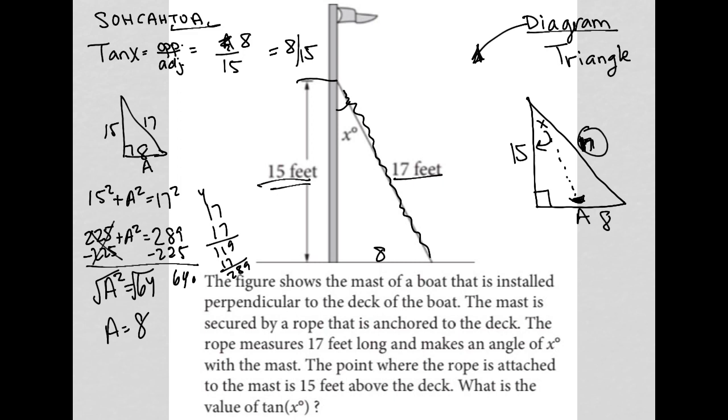So the answer to this question, you would bubble in 8. You'd bubble in your divided by bar. You'd bubble in a 1 and a 5 to get your 8 15ths.